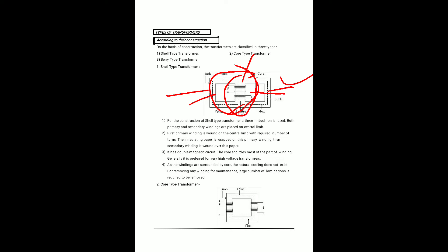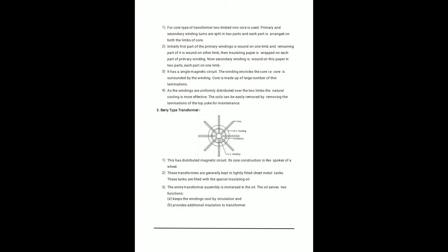In the core type transformer, two limbs and a core are used — there are two windows with two limbs. The primary and secondary winding turns are split into two parts, with each part arranged on both limbs of the core. The first part of the primary winding is wound on one limb and the remaining part is wound on the other limb.